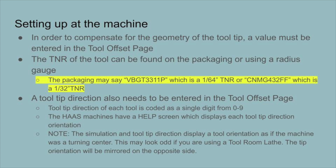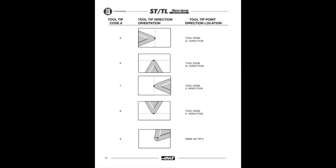Along with entering the tool nose radius, you also have to enter a tool tip direction. The tool tip direction of each tool is coded as a single digit from 0 to 9. The Haas machines have a help screen which helps display the tool tip direction orientation.